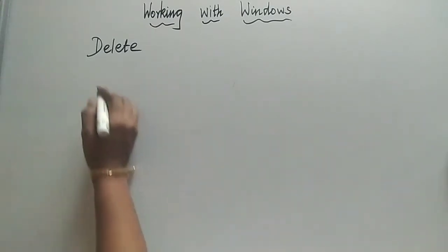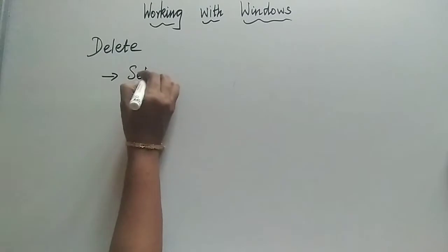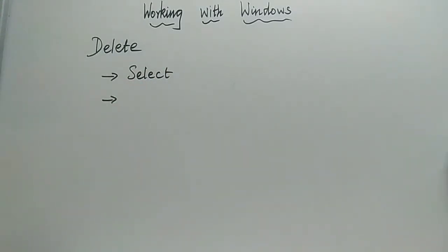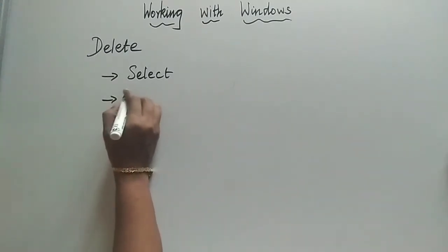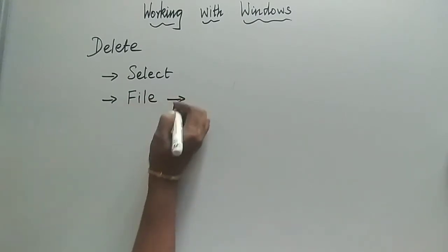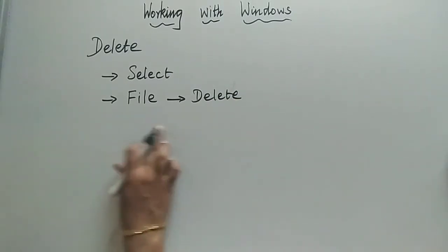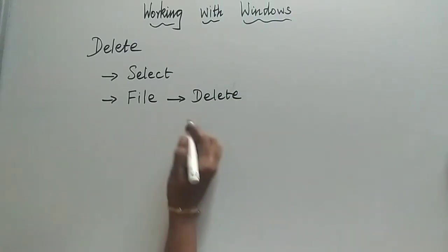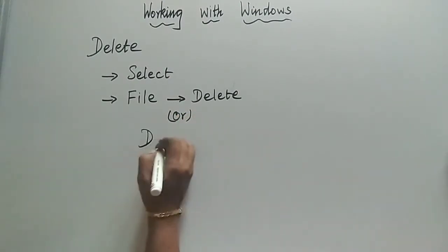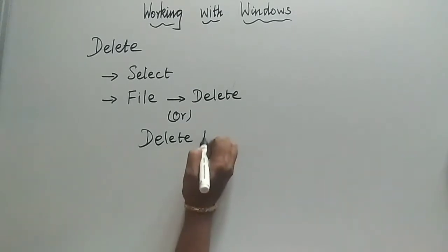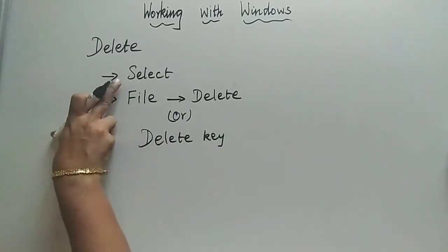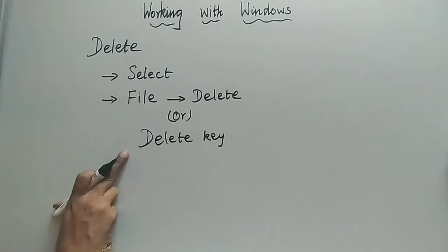To delete a file, the first step is to select the file or folder you are willing to delete. Then you have several methods. The first method: go to the menu, select File, then click Delete. The second method: use the keyboard Delete key — but remember, before that you must select the file or folder.